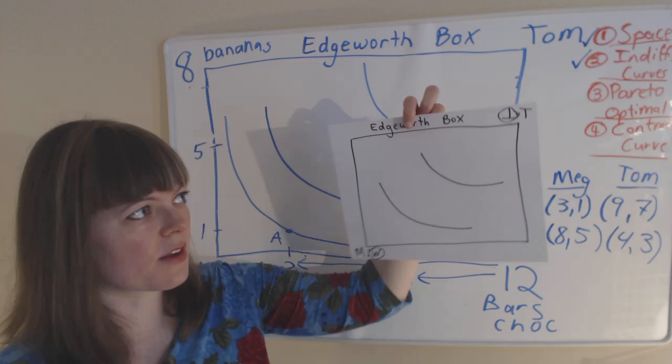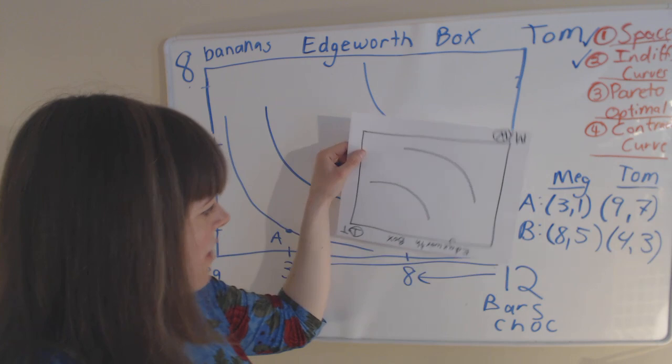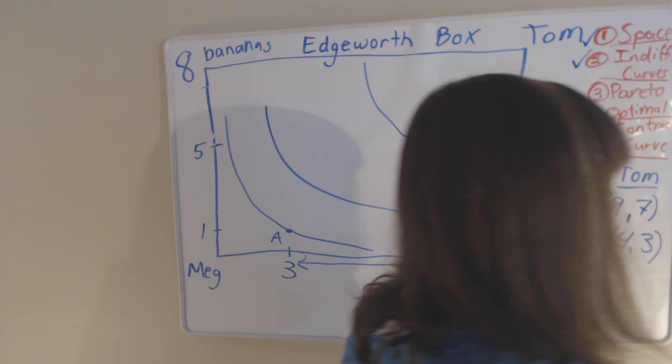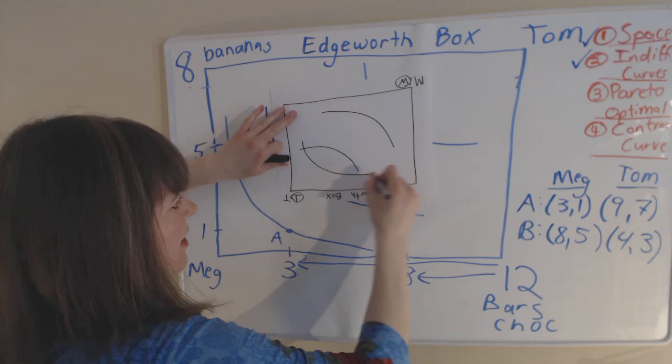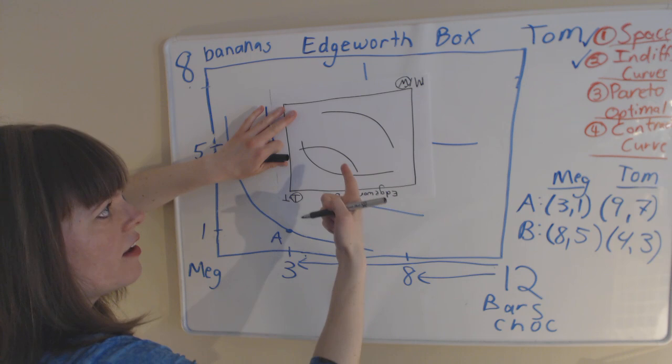So here is an Edgeworth box with Meg down here and Tom up there, kind of like we've got on our map now. And we flip this upside down and when we do that, Tom is now at the bottom and with Tom at the bottom, we can draw some indifference curves. So if Tom's down here, his indifference curves now look normal. His indifference curves look like this and Meg's indifference curves look weird. Hers look concave from this perspective.